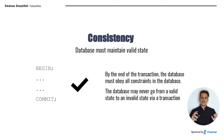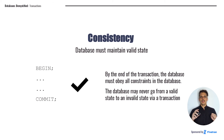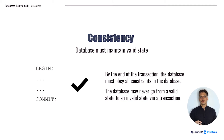The next concept, the C in ACID, is consistency. This means that databases must maintain a valid state. By the end of the transaction, the database must obey all of the constraints that are on the database. The database may never go from a valid state to an invalid state via a transaction. All of the constraints are going to be checked by the end of the transaction to make sure we did not violate one of these constraints — otherwise, our transaction will get rolled back. Transactions maintaining consistency allows us to more easily reason about our database and be confident that we don't end up in an invalid state.